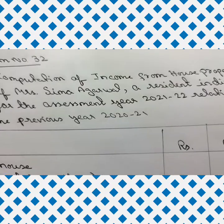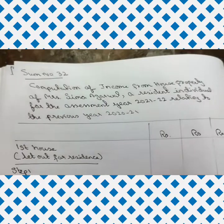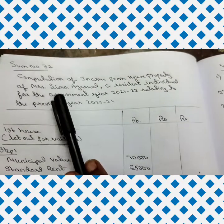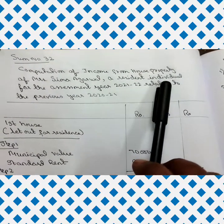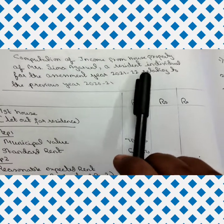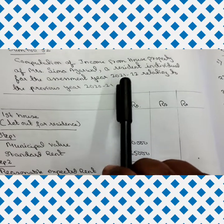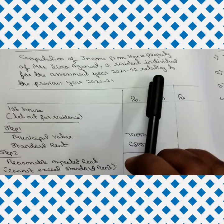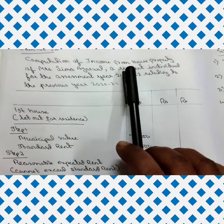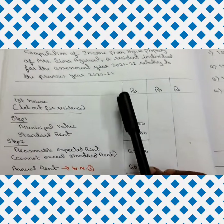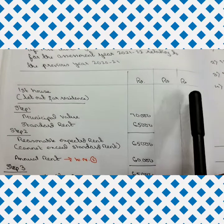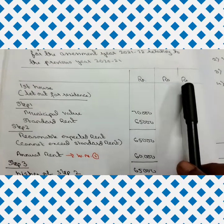Now we will solve sum number 32. First, write the heading: 'Computation of Income from House Property of Mrs. Seema Agarwal, a resident individual, for the Assessment Year 2021-22 relating to the Previous Year 2020-21.' Since there is more than one house, you must draw three amount columns — Rupees, Rupees, Rupees — this is mandatory.